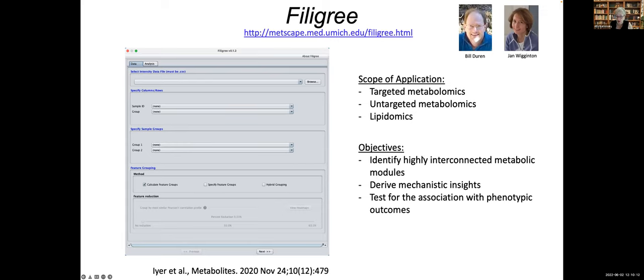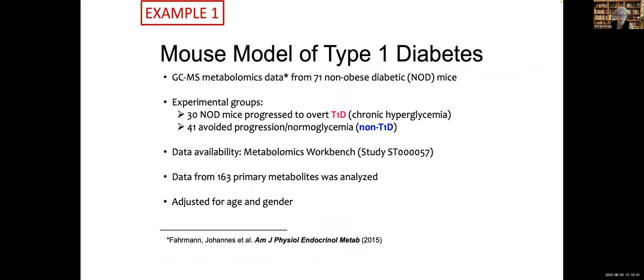The objectives are really to identify highly interconnected metabolic modules, derive mechanistic insights from the data, and also to be able to test this metabolic module association with phenotypes of interest and different phenotypic outcomes. Next, I'm going to show you a few examples of how we applied Filigree and this algorithm.